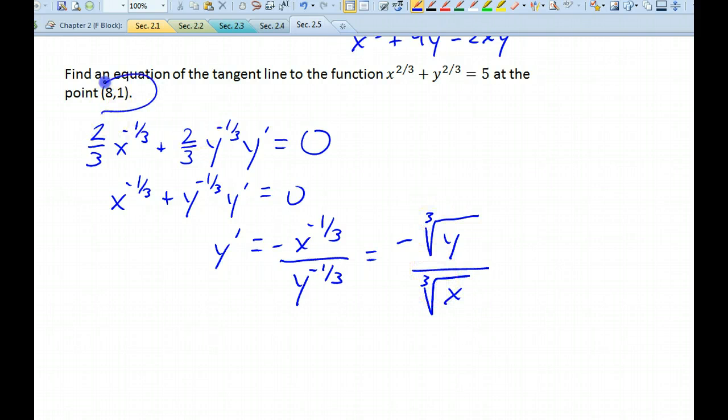So when we plug in this point 8 comma 1, y prime of 8 comma 1 is going to be the negative cube root of... y is on top, isn't it? Not x. It's going to be negative cube root of 1 over the cube root of 8, which is negative 1/2.